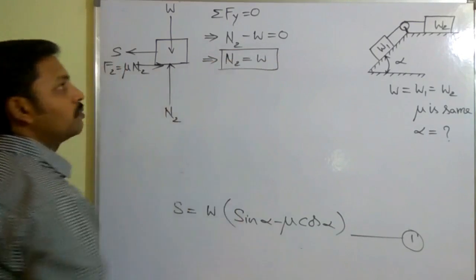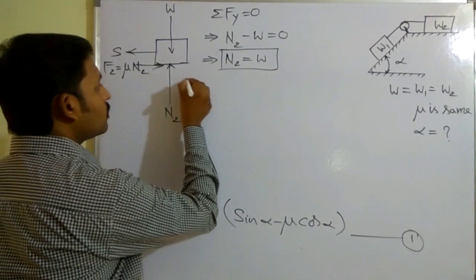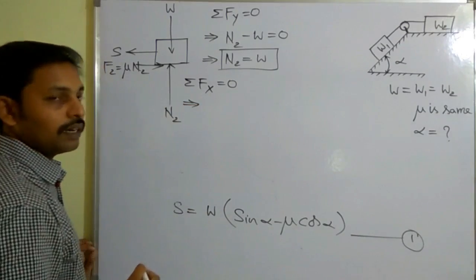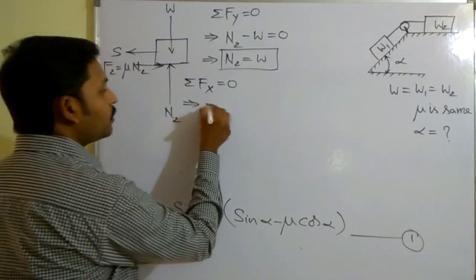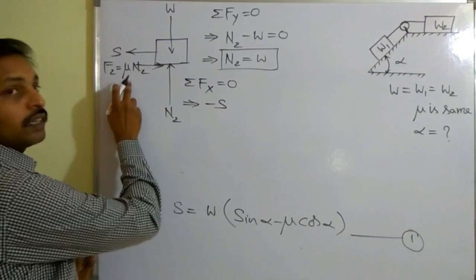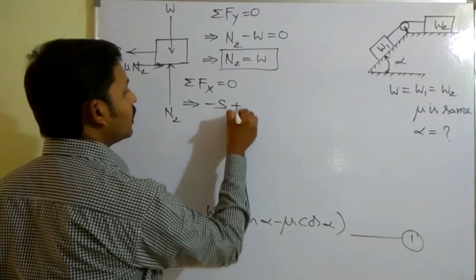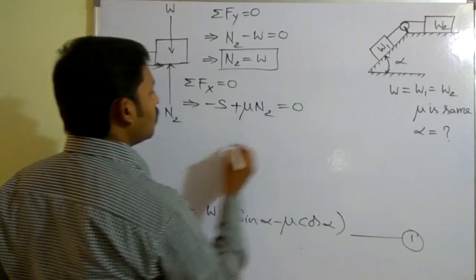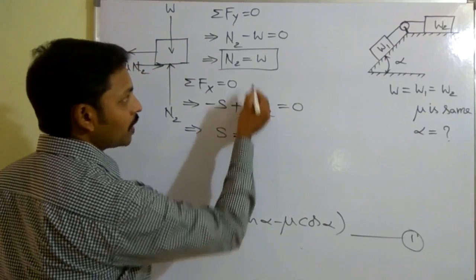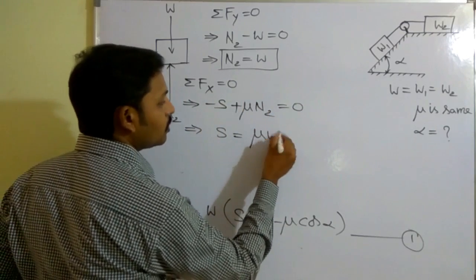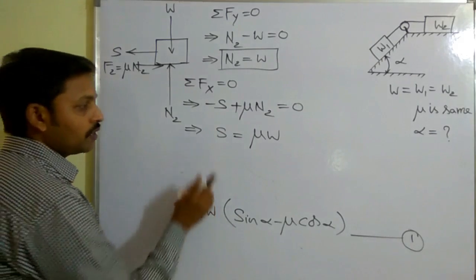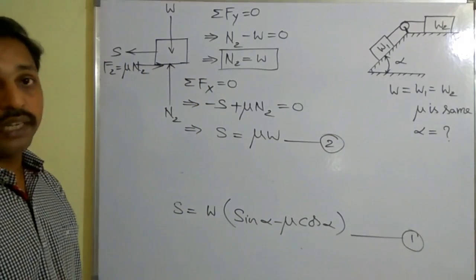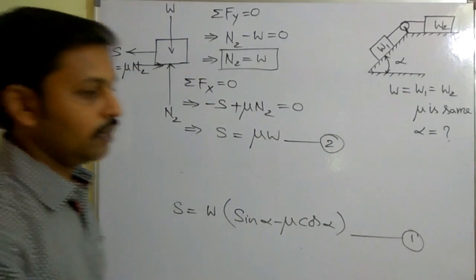Next, consider sigma Fx = 0 for block two. S acts along the negative x direction, and F2 (which is mu·N2) acts along positive x direction. No other forces, so: -S + mu·N2 = 0, giving S = mu·N2. Since N2 = W, we get S = mu·W. Consider this as Equation 2. Now from Equation 1 and Equation 2 we can find the value of alpha.